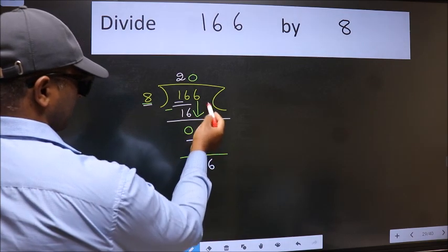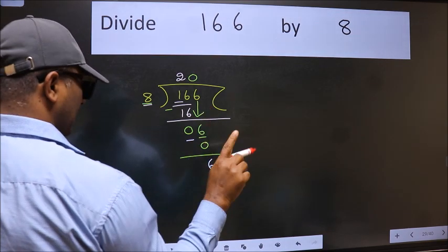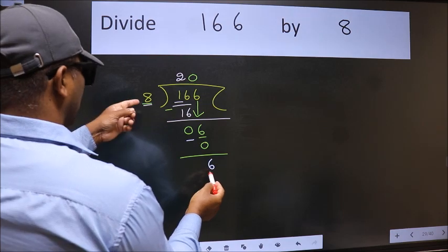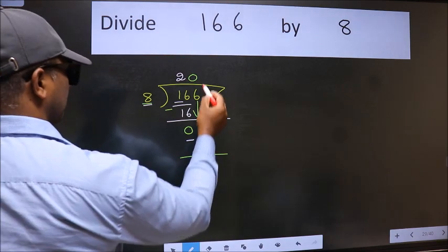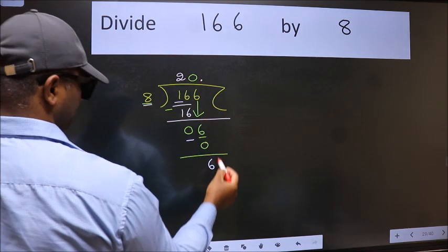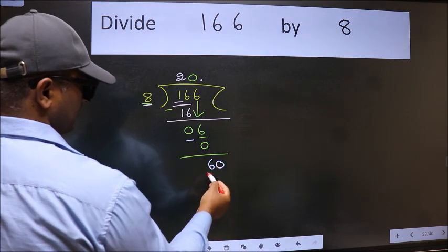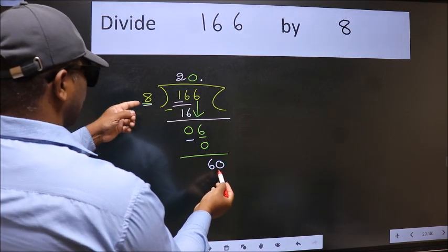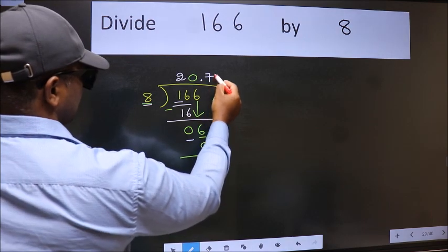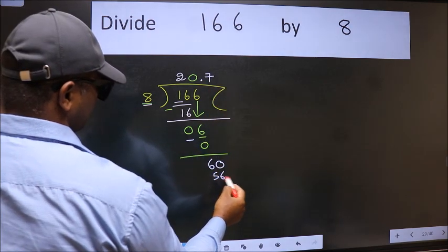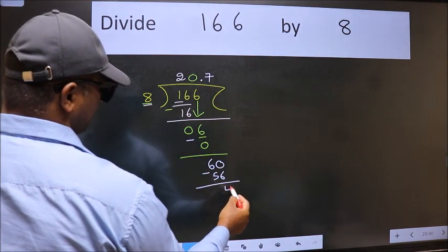Over here, we did not bring any number down, and 6 is smaller than 8. So now we can put dot and take 0. So, 60. A number close to 60 in 8 table is 8 sevens, 56. Now we subtract. We get 4.